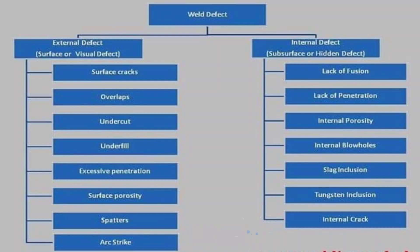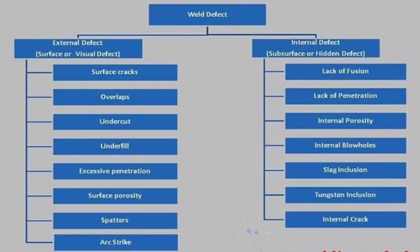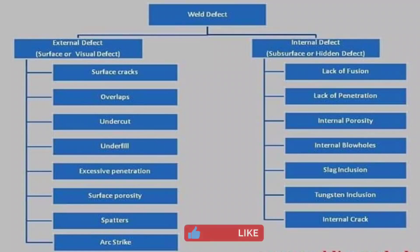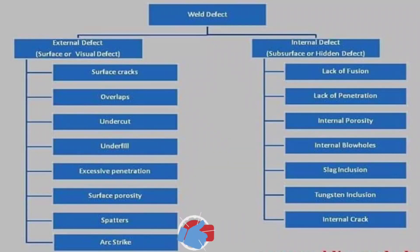Weld defects occur because of several reasons: using the wrong materials for the job, applying the incorrect process, welding under difficult conditions, or an inexperienced or unskilled welder. There are many types of welding defects, but in general, the most common weld defects are categorized on the basis of internal or hidden cracks and visual or surface cracks.